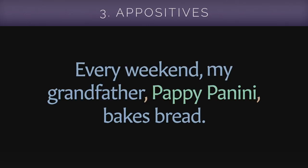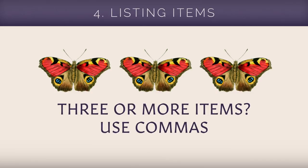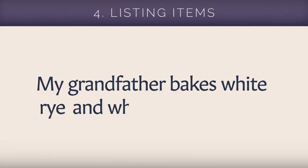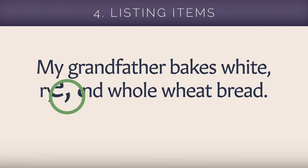Commas must also be used when listing three or more items within a sentence. If you want to explain that your grandfather bakes white, rye, and whole wheat bread, you would include a comma after the first and second item in the series up until the conjunction, which is "and" in this case. This comma, right before the conjunction, is considered the Oxford comma and technically is optional, although not using it can confuse your readers.